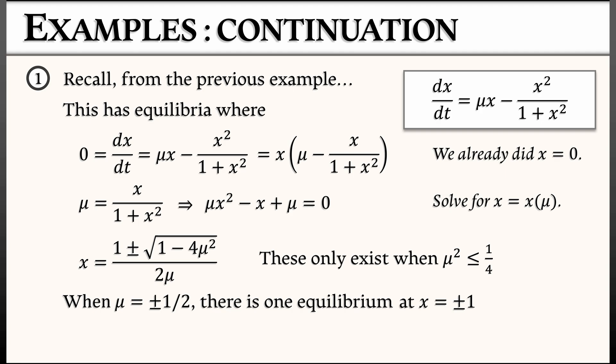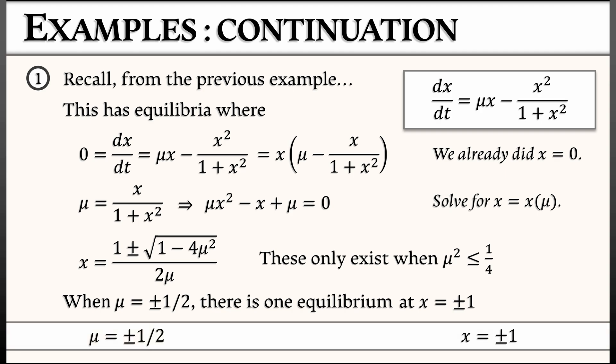That additional single equilibrium occurs at x equals plus or minus 1 respectively. You might think that because as you cross mu equals plus or minus 1/2 we're going from 1 equilibrium to 3 equilibria, these have to be pitchforks. But they're not. Because these changes are happening at x equals plus or minus 1 respectively, whereas that other equilibrium is at x equals 0. So locally, in a neighborhood of mu equals plus or minus 1/2, x equals plus or minus 1, we are going from 0 to 2 equilibria.